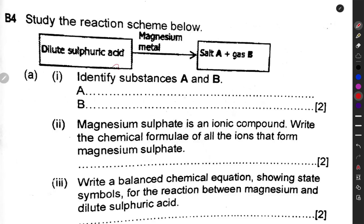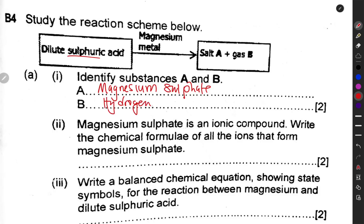The salt that is produced — the first part of the name comes from the metal, which is magnesium, and the end part comes from the acid. For sulfuric acid, it becomes sulfate. So substance A is magnesium sulfate, and this reaction also produces hydrogen gas, so substance B is hydrogen gas.